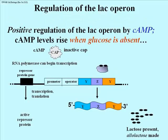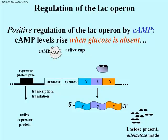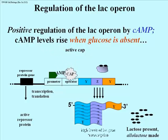Let's look at positive regulation of the lac operon by cyclic AMP. If glucose is limiting or gone, the E. coli cell responds by synthesizing cyclic AMP. The cyclic AMP binds to a protein called CAP protein, or cyclic AMP binding protein. When cyclic AMP is bound to CAP protein, CAP becomes an active activator of transcription. When glucose is really absent and lactose must be used, cyclic AMP levels rise, CAP protein becomes active, and binds to the operator — facilitating the initiation of transcription by RNA polymerase.